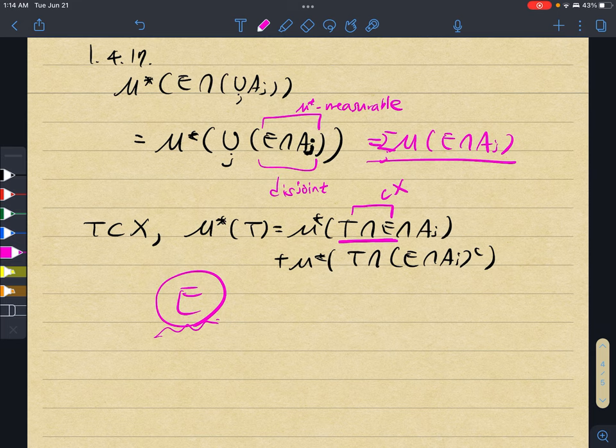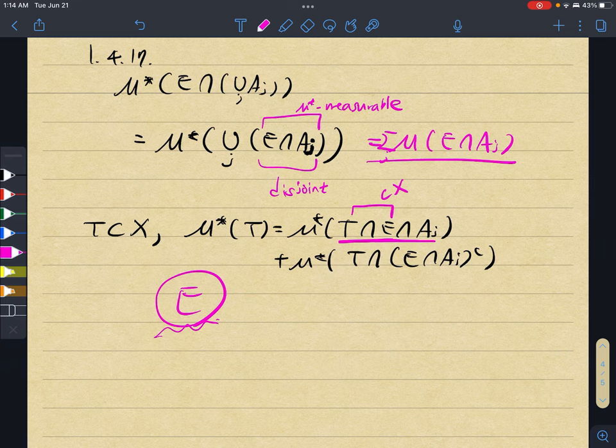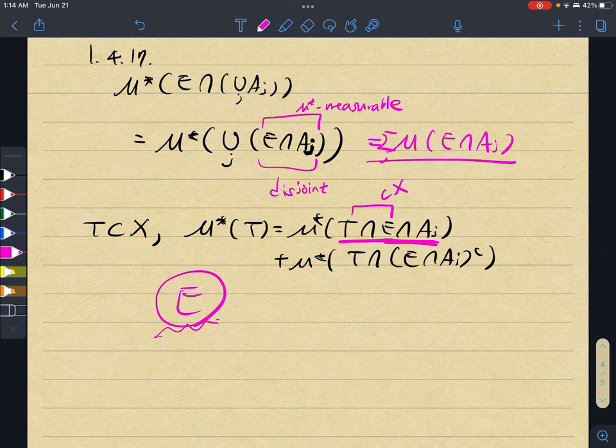So because of the fact that E is measurable, we can see that this will also hold for all E ∩ Aj's, because that's the property of the measurable set E.